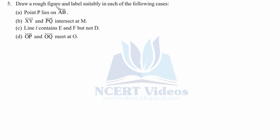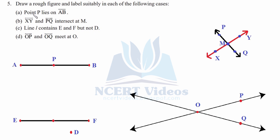Question five: draw a rough figure and label suitably. Part a: point P lies on AB — shown in the figure. Part b: lines XY and PQ intersect at point M — two lines intersecting at M. Part c: line L contains E and F but not D, since D falls at some other point. Part d: OP and OQ meet at point O — line OP and line OQ both originate from O.